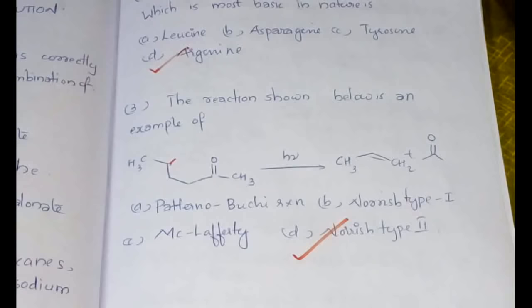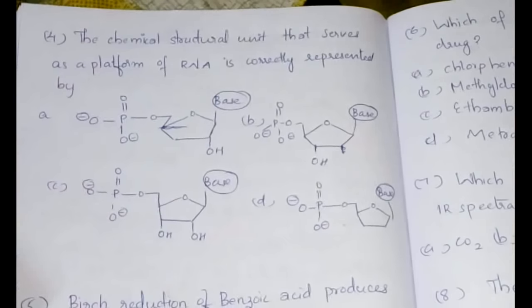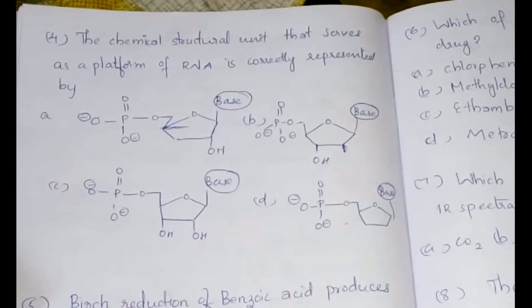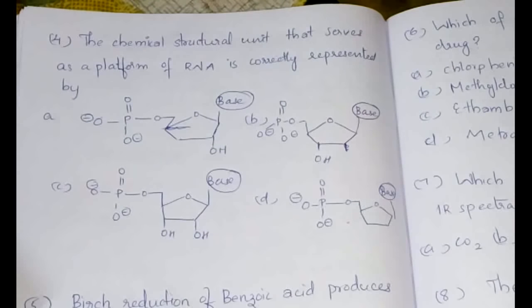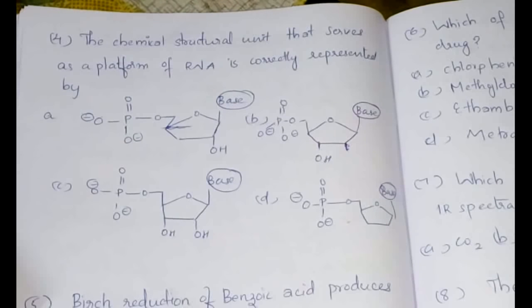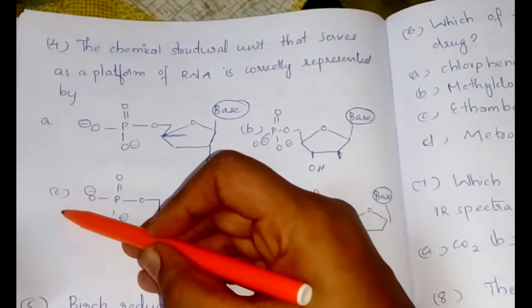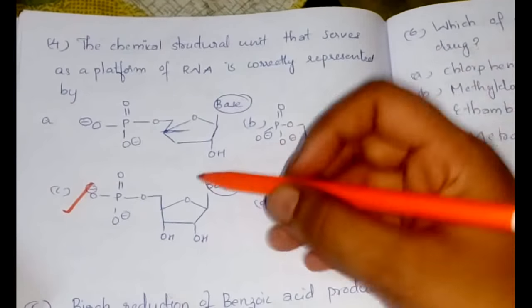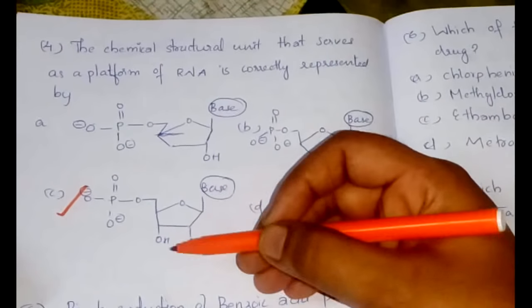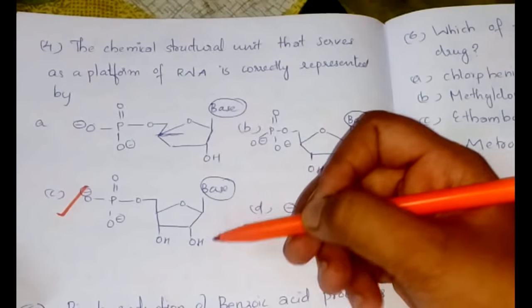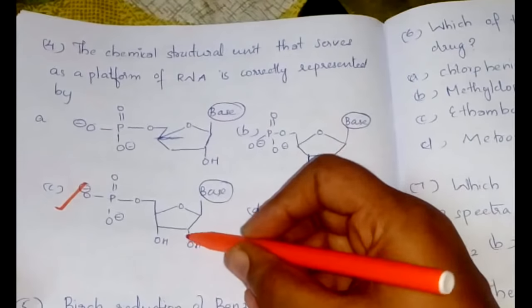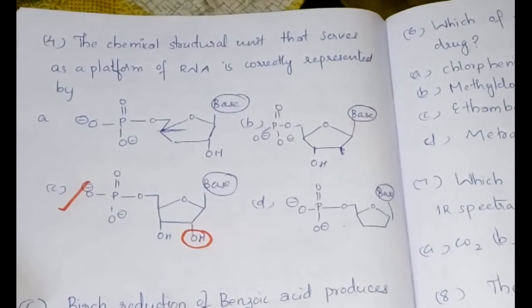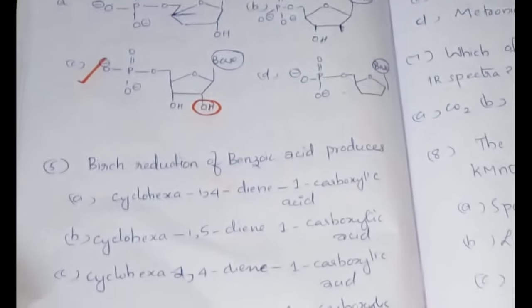Here we have another question which I have already mentioned in one of my videos about biomolecules. I told you to identify the structure of ribose and deoxyribose. RNA should have ribose, and the structure should be option C because everything else is the same—you just have to see the positions of OH. There should be OH in both these positions for a ribonucleic acid, and for a deoxyribonucleic acid (DNA) this should not be present.